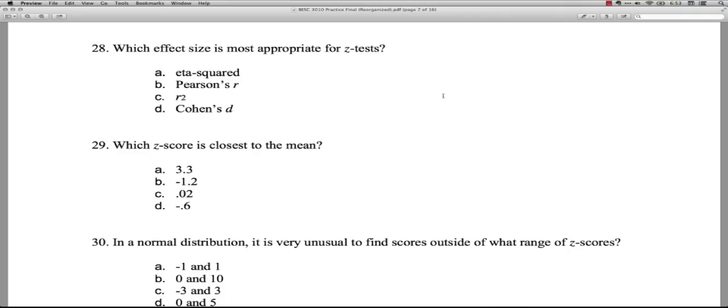On the other hand, d, which is Cohen's d, that is a very common one for Z test. In the Z test you're looking at how far a sample mean is from a population mean. The d is a very good measure for that because it's like a Z score. It says how far it is in standard deviations.